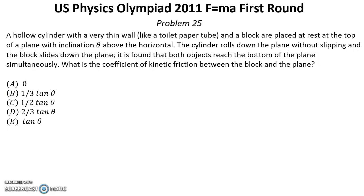Problem number 25. Solution for this problem you can find below this video in the reference description. A closed cylinder with a very thin wall like toilet paper tube and block are placed at rest at the top of the plane, with inclination theta above the horizontal. The cylinder rows down the plane without slipping and the block slides down the plane. It is found that both objects reach the bottom of the plane simultaneously. What is the coefficient of kinetic friction between the block and the plane?